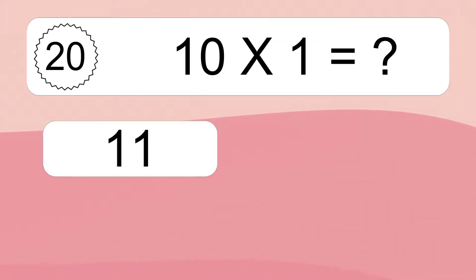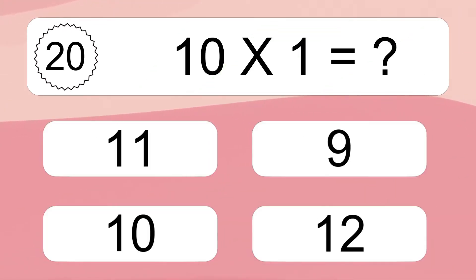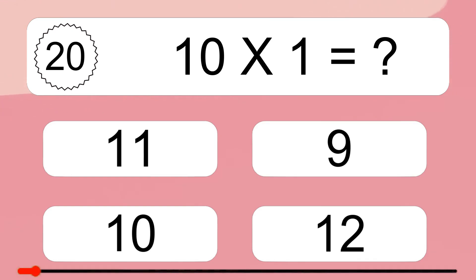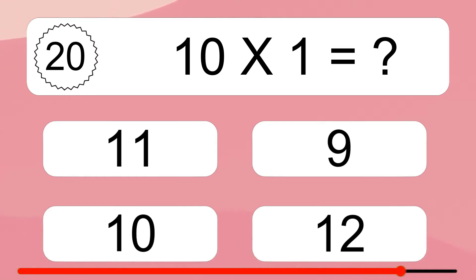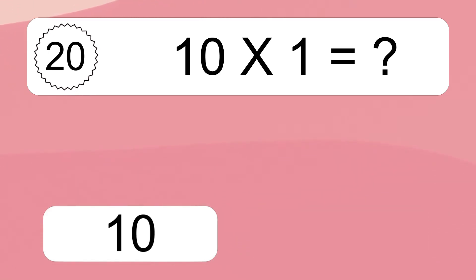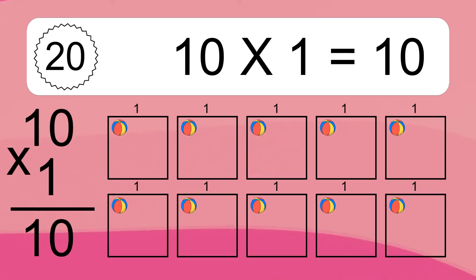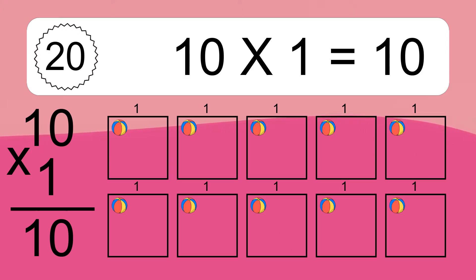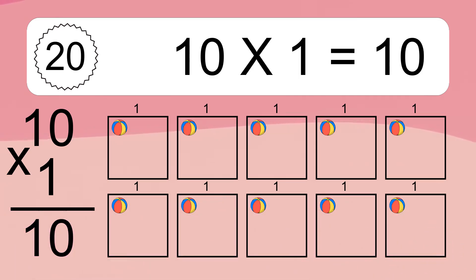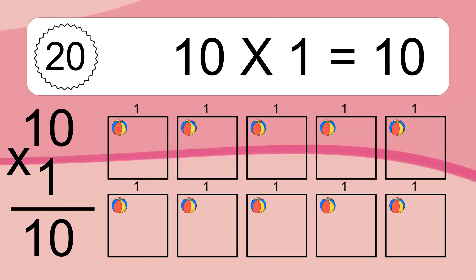10 times 1 equals what? 10 times 1 equals 10. We have 10 boxes, and each box has 1 colorful ball inside. If you count all the balls in all the boxes together, you will have 10 times 1 balls. This equals 10 balls.